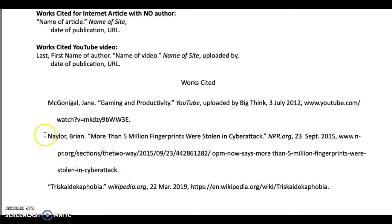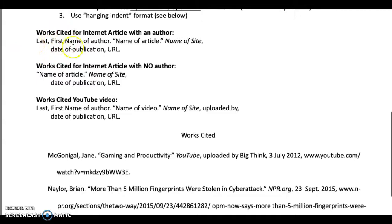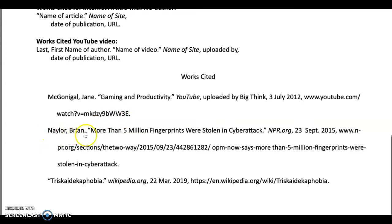Let's go through the general setup of a works cited quickly. Author last name, author first name, period. Name your article in quotation marks — notice the period goes inside the quotation marks. Name of the website in italics, comma, date of publication, comma, URL. Author last name, first name, period. Article in quotation marks — notice no italics there. The only italics you're going to use are for your website. Notice the date format: day, month, year, comma. There are no commas within the date itself. Then your entire URL.